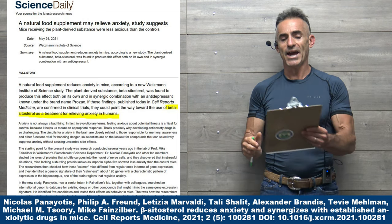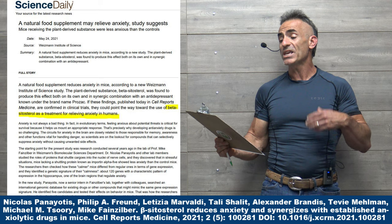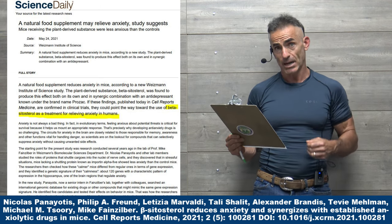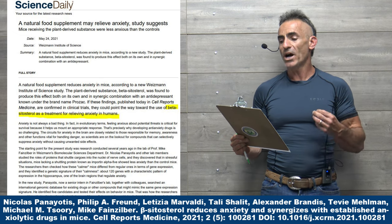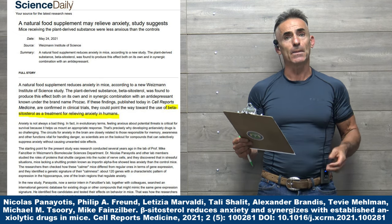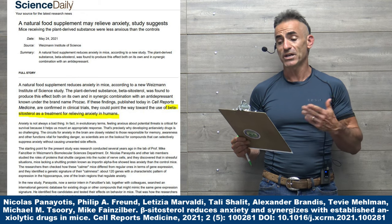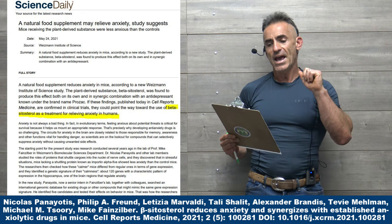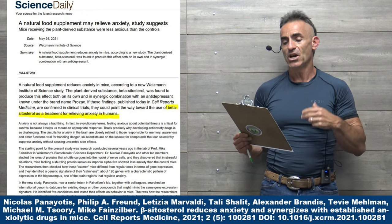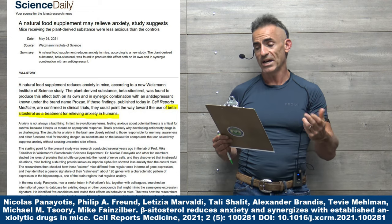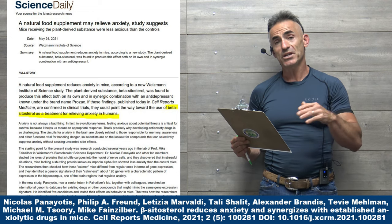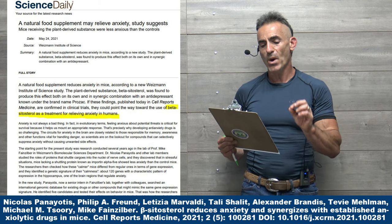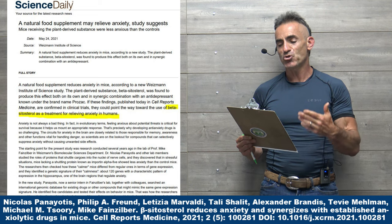Again, the caveat being this is carried out to human trials. However, this is fascinating. So let us begin with the research as follows: A natural food supplement may relieve anxiety, studies suggest. A natural food supplement reduces the anxiety in mice according to a new Weizmann Institute of Science study. The plant-derived substance beta-sitosterol was found to produce this effect both on its own and in synergistic combination with an antidepressant normally known as Prozac.